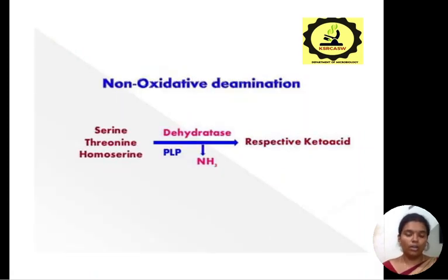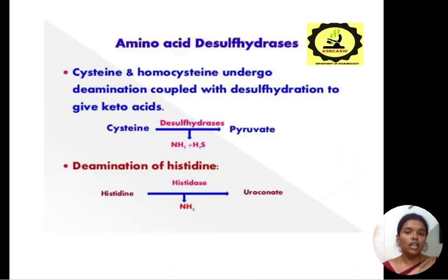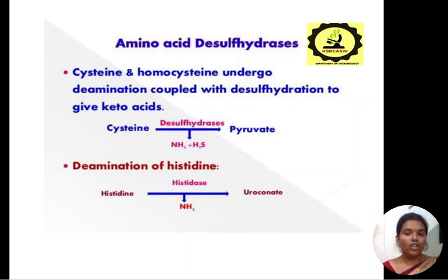Next is non-oxidative deamination. In this type of deamination reaction, serine, threonine, and homoserine in the presence of the enzyme dehydratase give the respective keto acids. Next is amino acid desulfuration. In this, cysteine and homocysteine undergo a deamination process coupled with desulfuration to give keto acids. For example, cysteine on desulfuration combined with deamination gives pyruvate. Deamination of histidine gives urocanate.